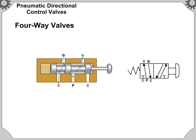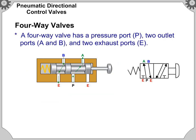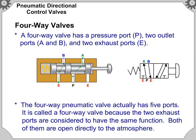A four-way valve has a pressure port P, two outlet ports A and B, and two exhaust ports E. The four-way pneumatic valve actually has five ports. It is called a four-way valve because the two exhaust ports are considered to have the same function — both of them are open directly to the atmosphere.